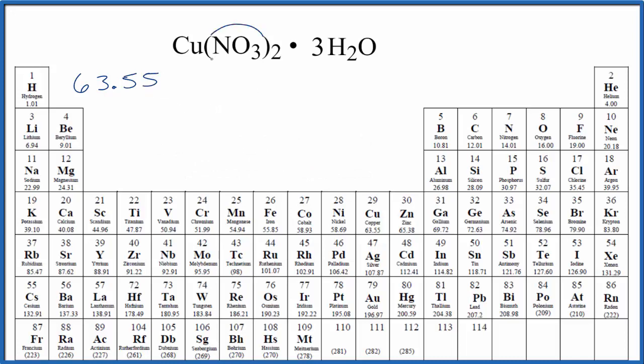Then we have this NO3 here in parentheses with the two on the outside. So we're going to find the molar mass for the nitrate ion, NO3, and we'll multiply that by two. Let's put brackets here and then we'll find the molar mass for the NO3.